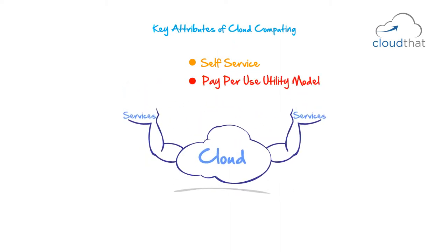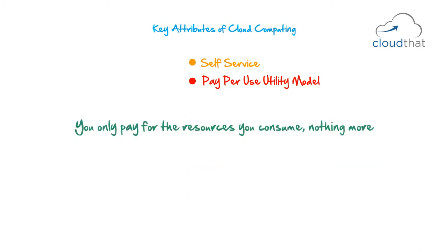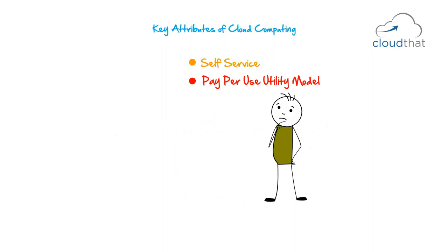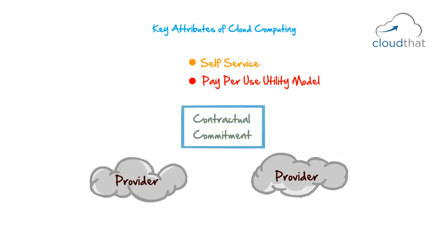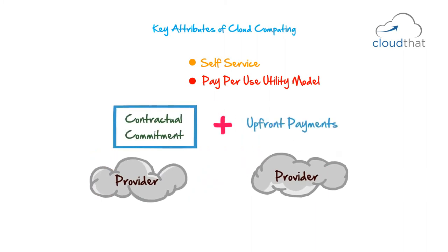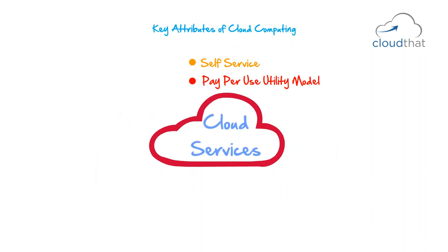The next attribute is a pay-per-use utility model. Cloud providers must allow users to request and use the desired amount of services without any upfront cost — you only pay for the resources you consume, nothing more. If you use a machine for 500 hours and store 1 TB of data, at the end of the month you are billed for those 500 machine hours and that 1 TB of storage only. Any provider that requires a contractual commitment and upfront payments cannot be considered a cloud provider.